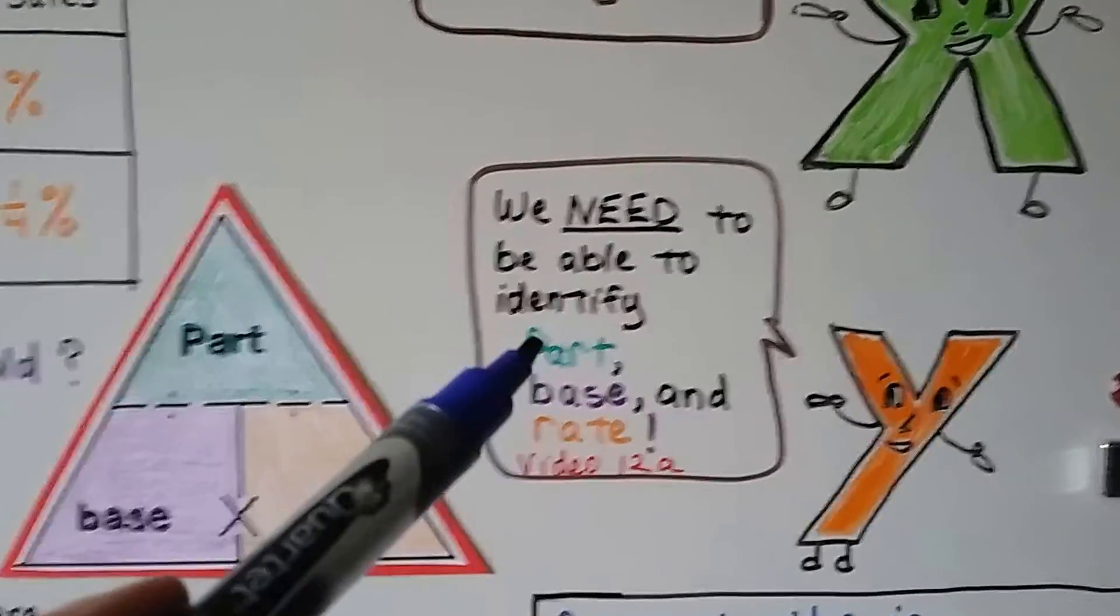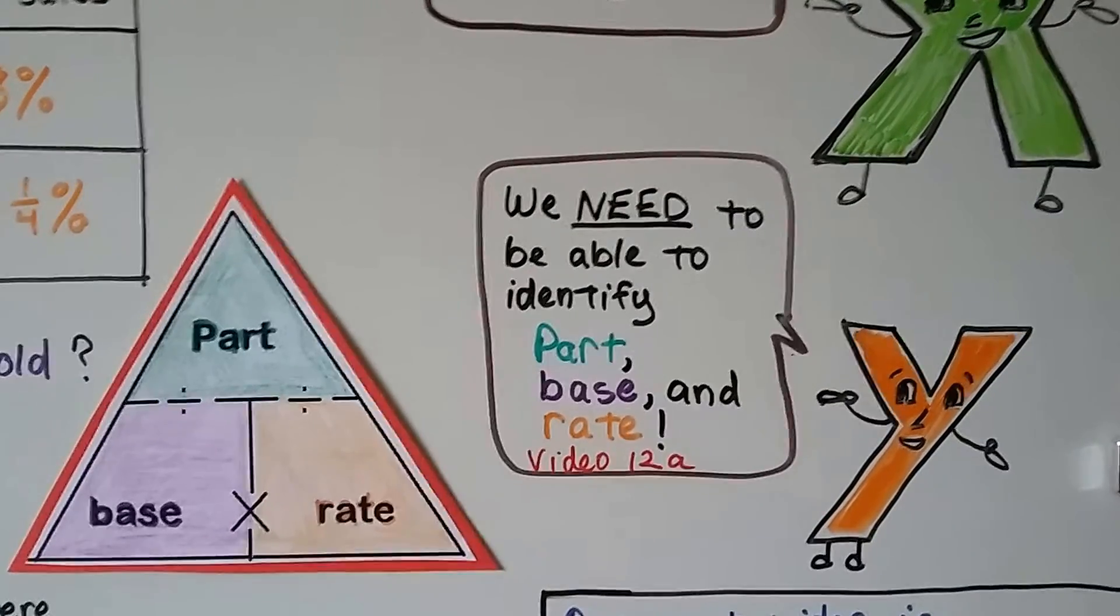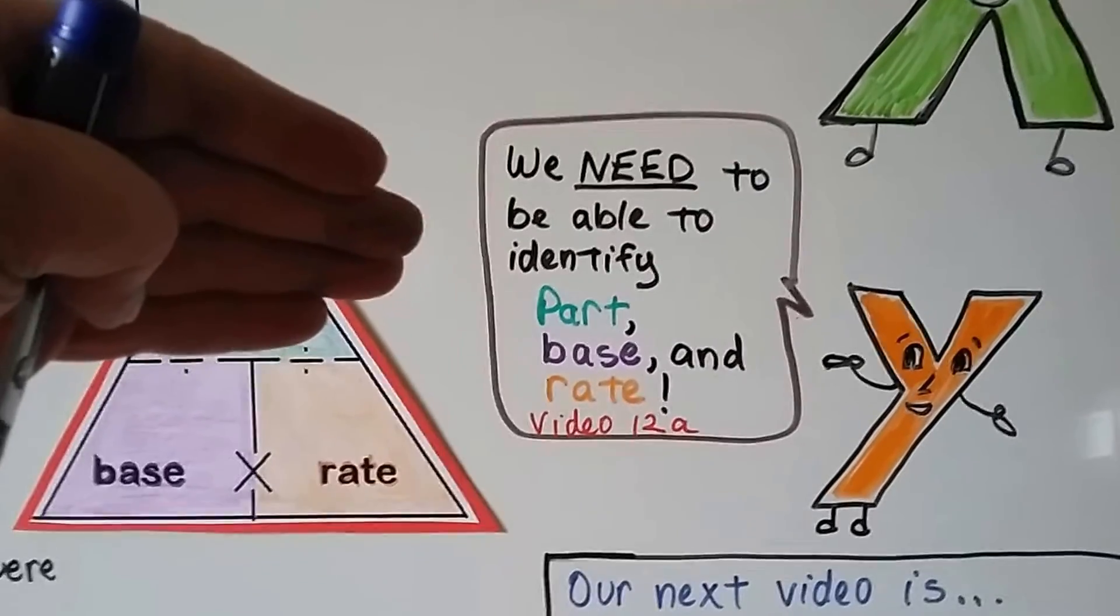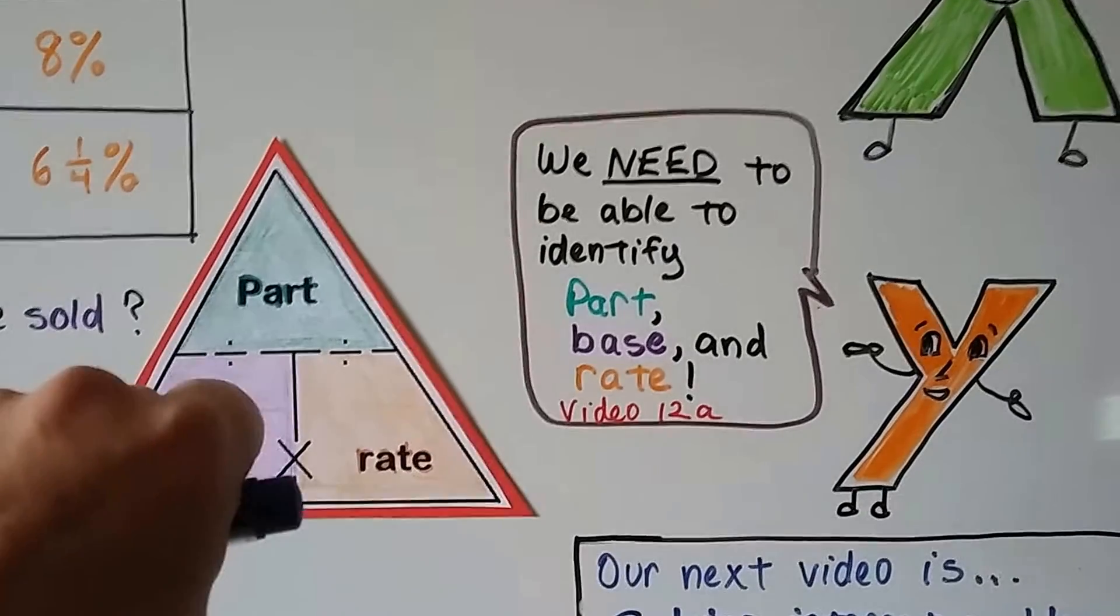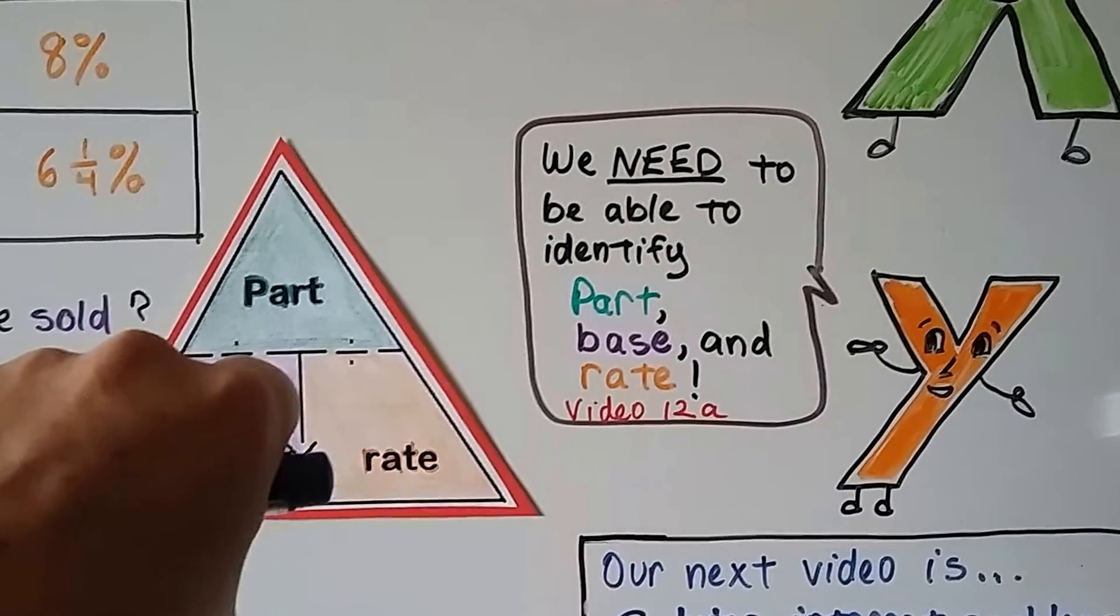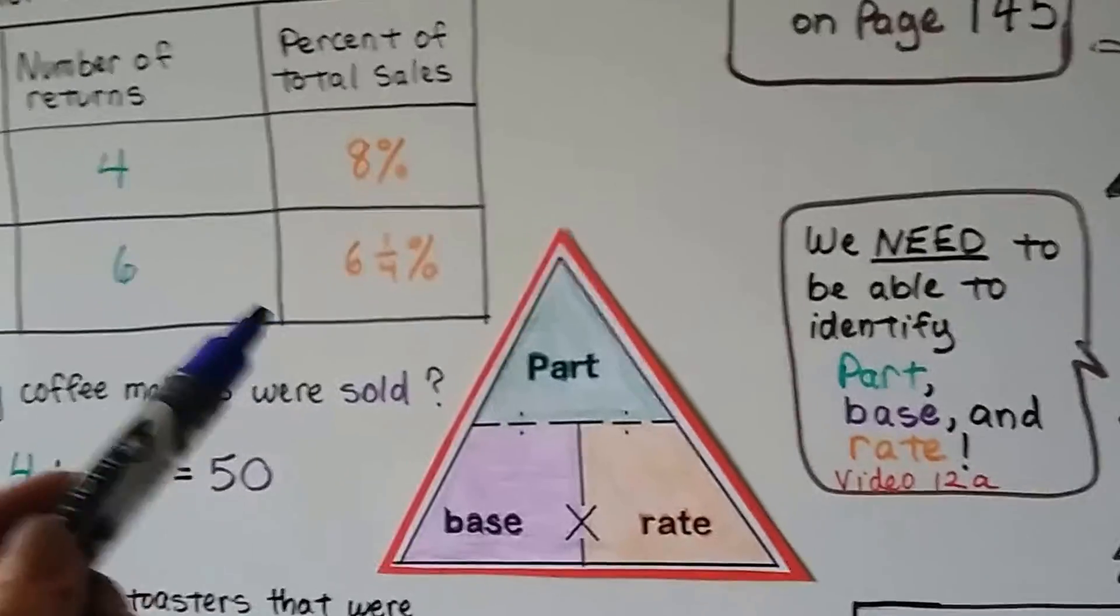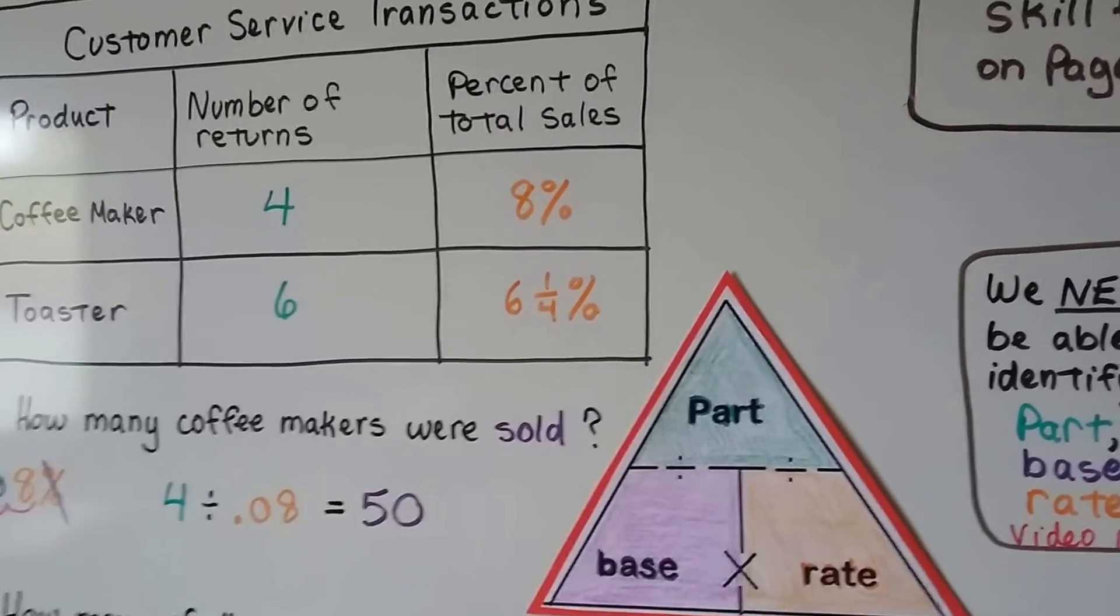If you can identify the part, the base, and the rate, it's going to make your life a lot easier. You'll be able to say, okay, I need to find the part, so I'm covering it. I'm going to do base times rate. I know which one the part is. I need to find the base, so I'm going to do part divided by rate. And if you can identify in the problem which one is the part, which one is the base, which one is the rate, it's really going to make your life easy.